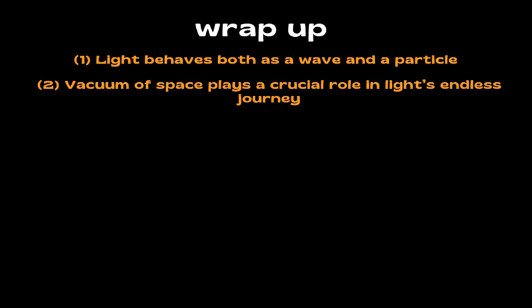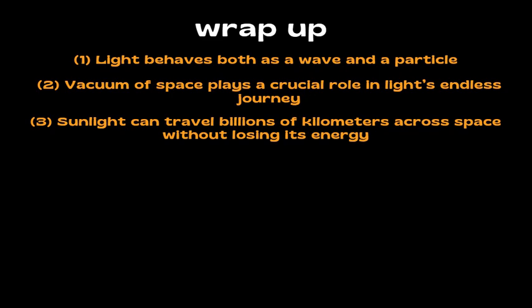Next, the vacuum of space plays a crucial role in light's endless journey. Without the resistance or friction found in air or other materials, light moves freely at its constant speed, undisturbed by the vast emptiness of the universe. This is why sunlight can travel billions of kilometers across space without losing its energy.